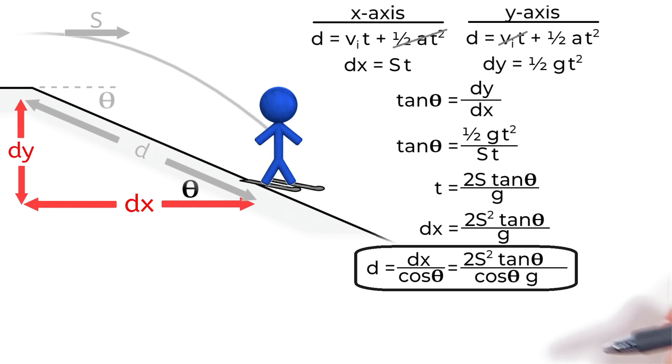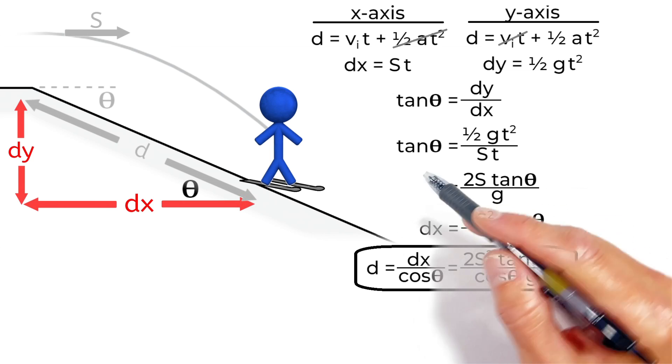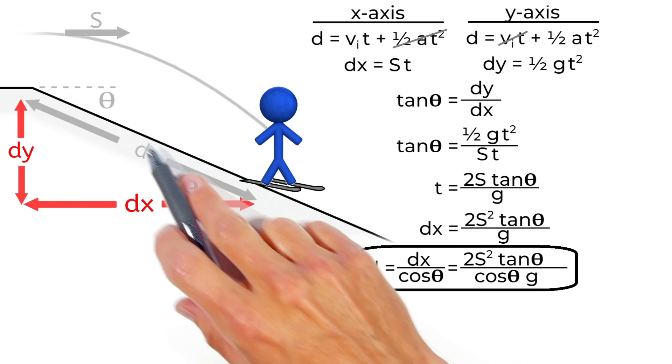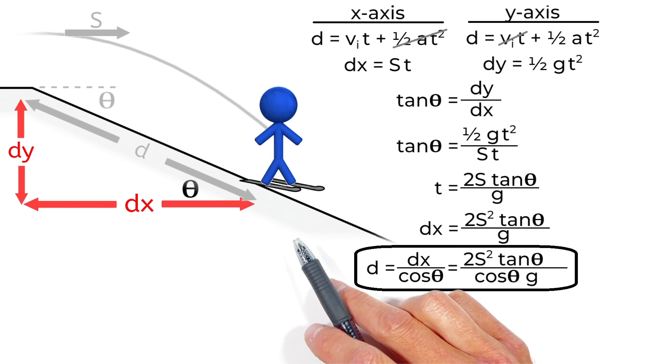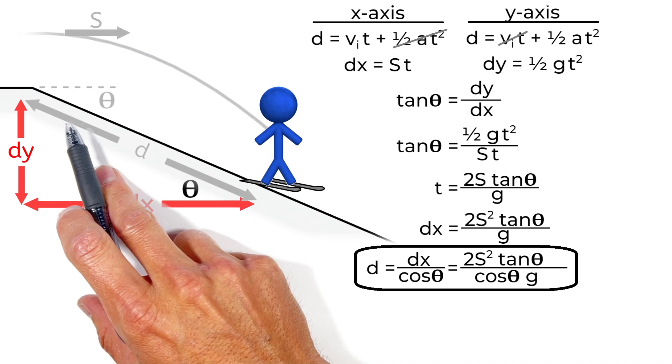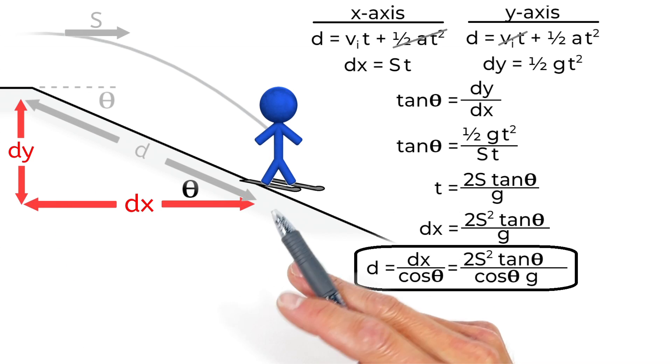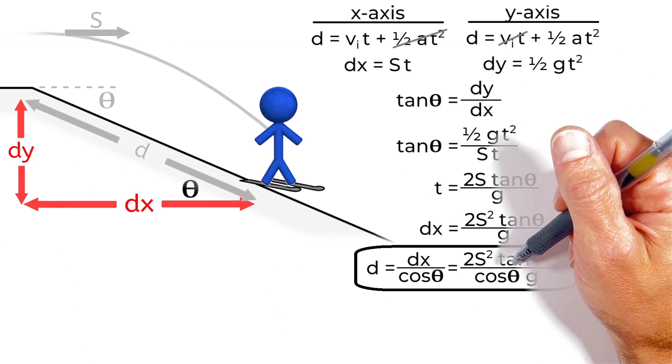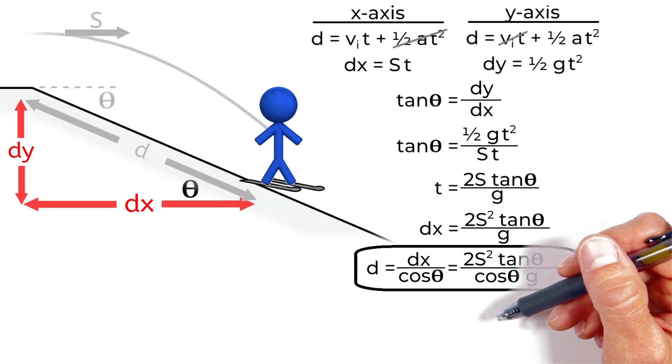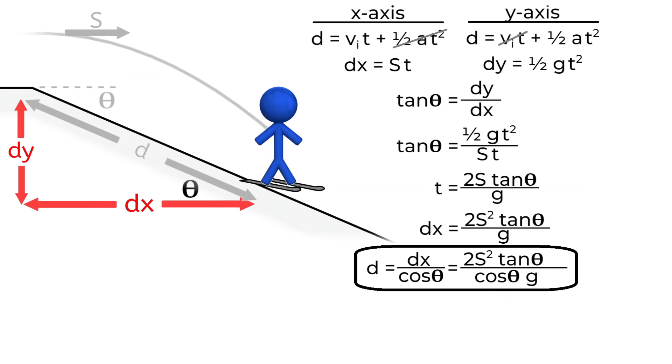And realize what we have now is an equation that's going to allow us to solve for just how far any projectile is going to go down a hill, provided we know its initial speed, as well as the angle of the hill, and of course, the acceleration due to gravity. So I hope you found this useful. And on that note, that's all for now.